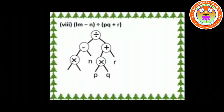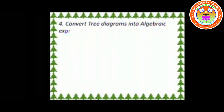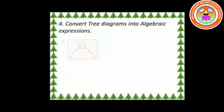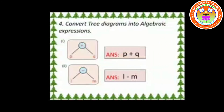Question 4: Convert tree diagrams into algebraic expressions. First one: the node is plus and its leaves are P and Q, so the answer is P + Q. Second one: similarly we can write it as L − M.